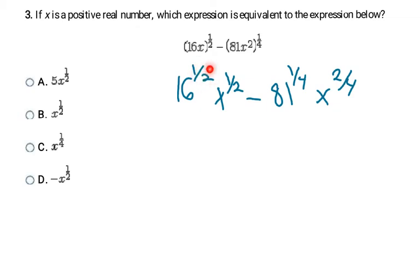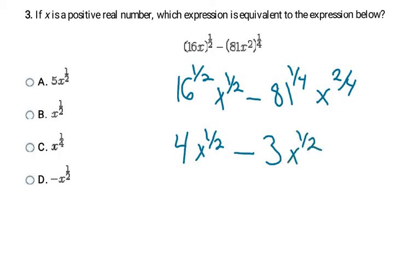Since an exponent of 1/2 means square root, the square root of 16 is 4, and x^(1/2) stays. An exponent of 1/4 means the fourth root, so the fourth root of 81 is 3 — you can use a calculator for that. The exponent 2/4 reduces to 1/2, so we have x^(1/2). Now both terms have x^(1/2), so we combine: 4 minus 3 is 1, and the x^(1/2) carries through. The coefficient of 1 is left implicit, so the answer is x^(1/2), which is letter B.